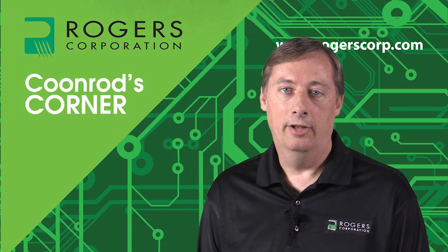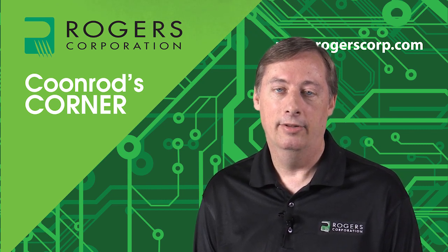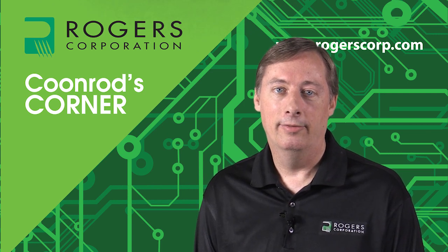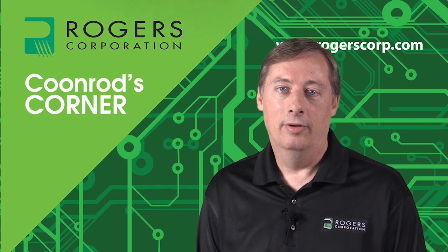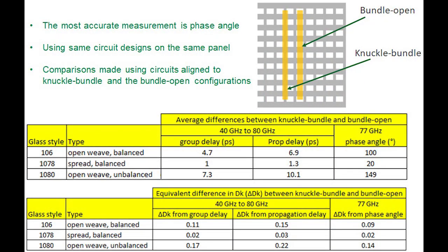Several months ago I did a thorough study on the glass weave effect, looking at the 106, 1080, and 1078 glass styles in a microstrip format. We inspected about 80 circuits per panel, looking for the exact alignment we wanted. For each panel we had to find one circuit with perfect alignment for the knuckle bundle configuration and another with the bundle open configuration. If we could not find both circuits on the same panel, we discarded it and moved on. It took a long time to find the ideal circuits, but we were able to capture this effect accurately.